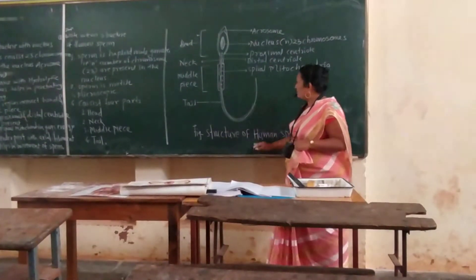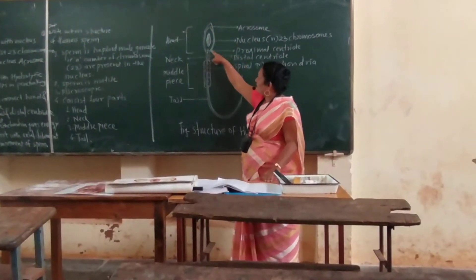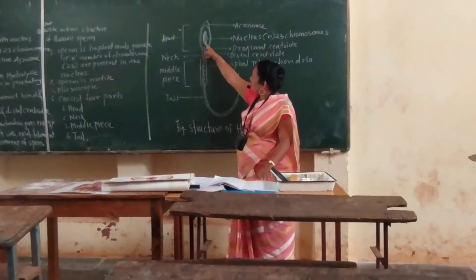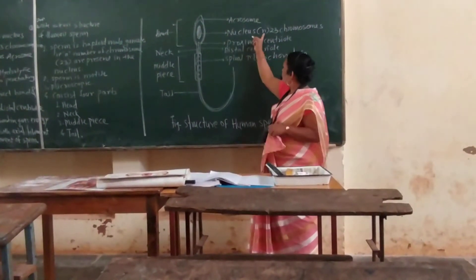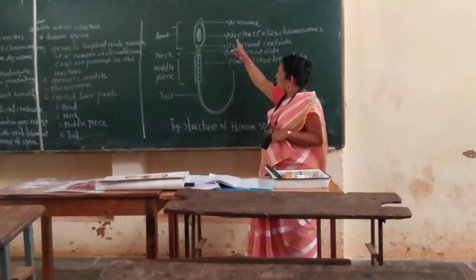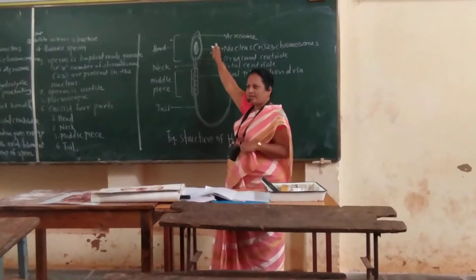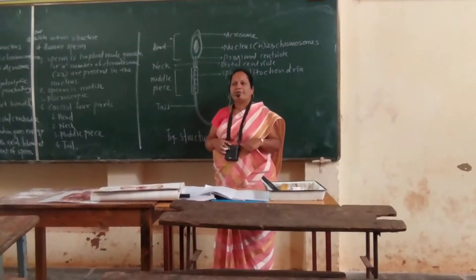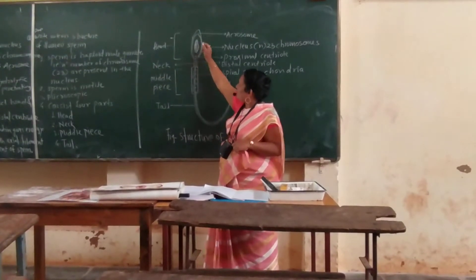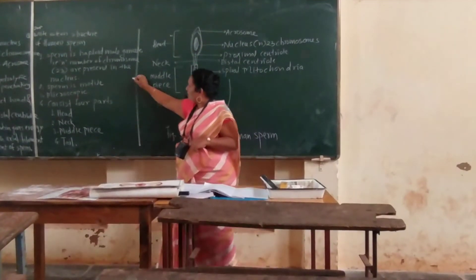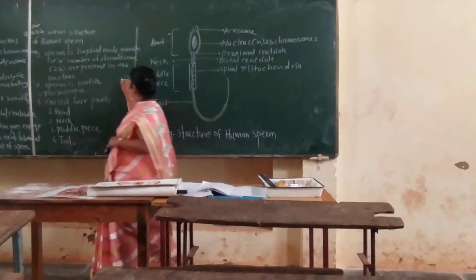The structure of human sperm shows that the upper oval structure is the head. Inside the head, a large nucleus is present with n number of chromosomes, that is 23 number of chromosomes. Above this head, a triangular acrosomal cap is there. That acrosomal cap consists of hyaluronic enzymes. These enzymes, when sperm comes in contact with the egg, help the sperm penetrate the egg.